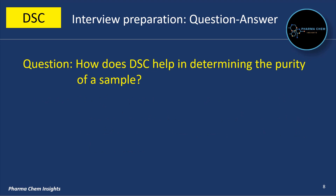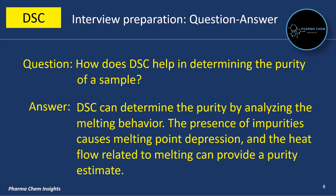Next question: How does DSC help in determining the purity of a sample? DSC can determine purity by analyzing the melting behavior. The presence of impurities causes melting point depression, and the heat flow related to melting can provide a purity estimate.